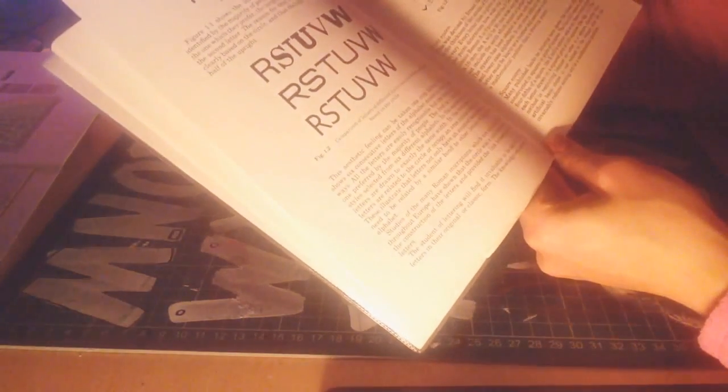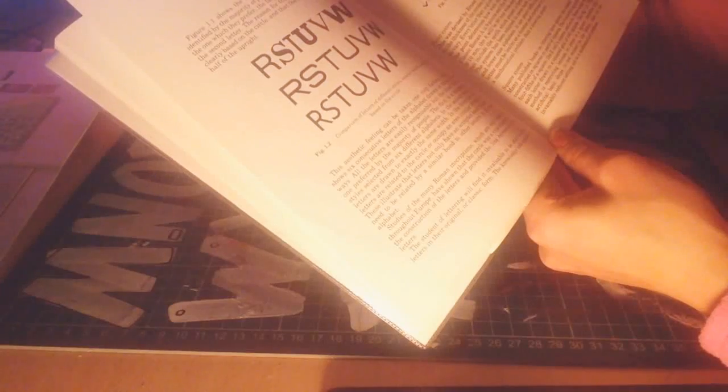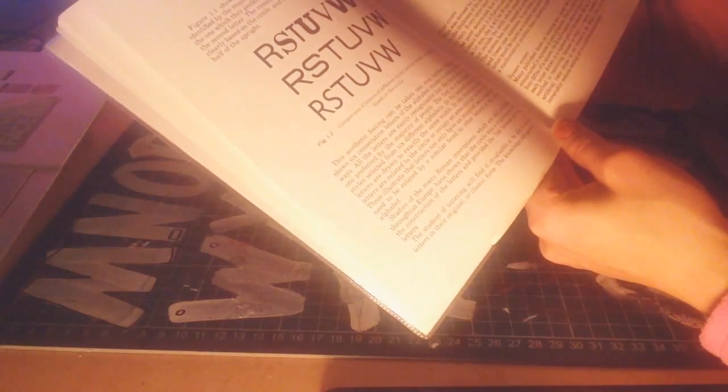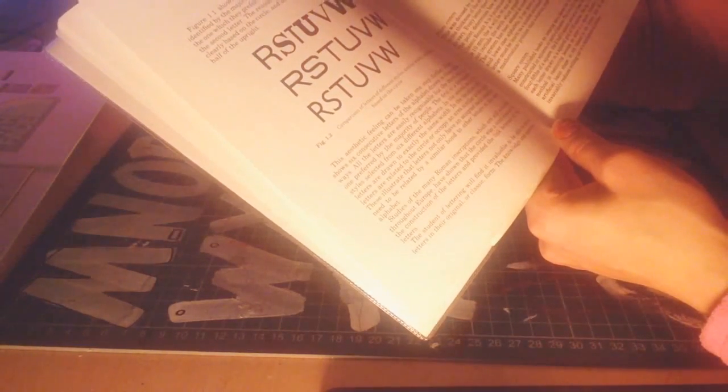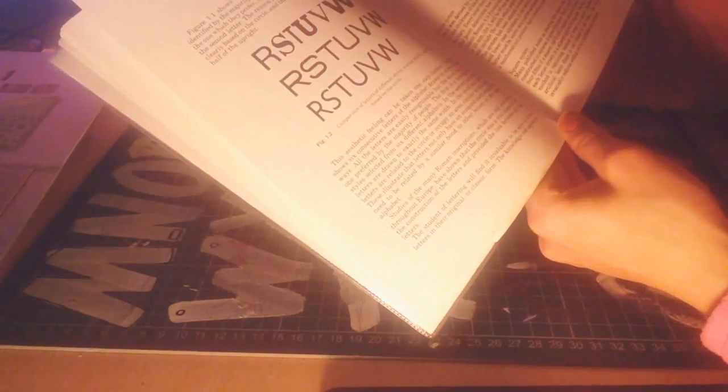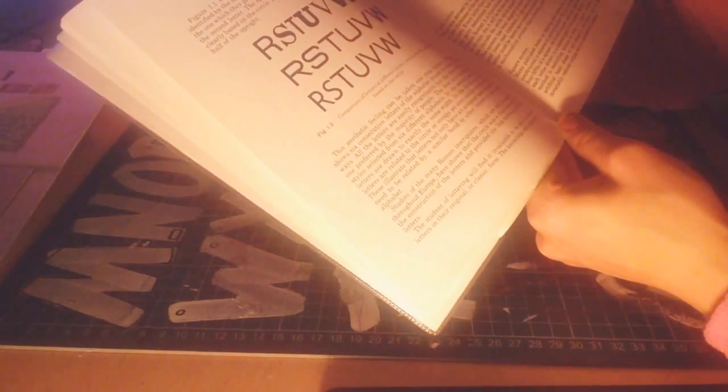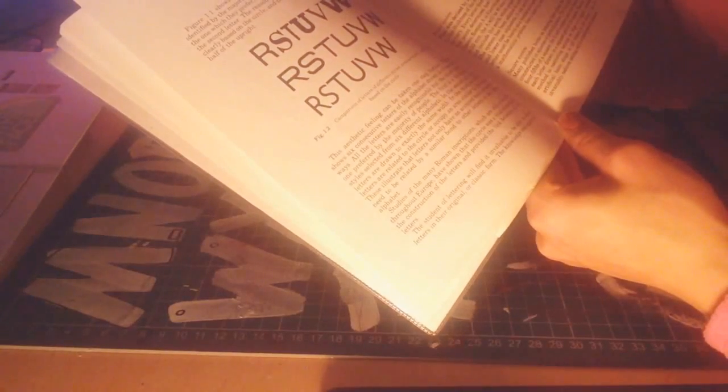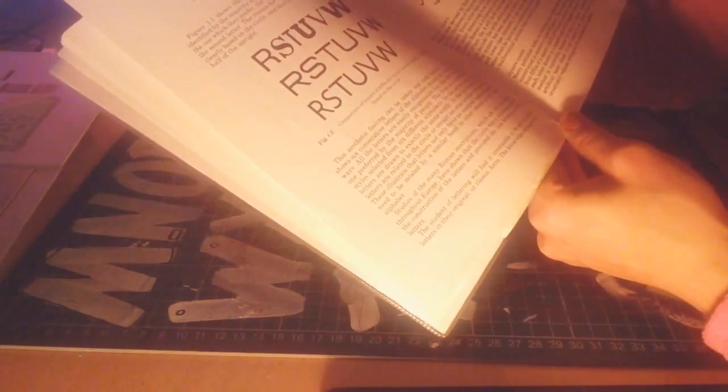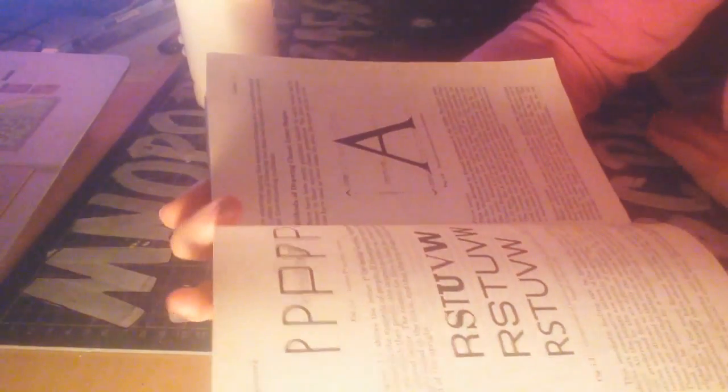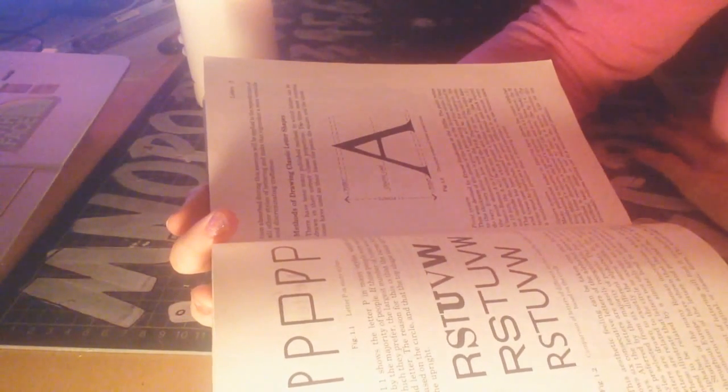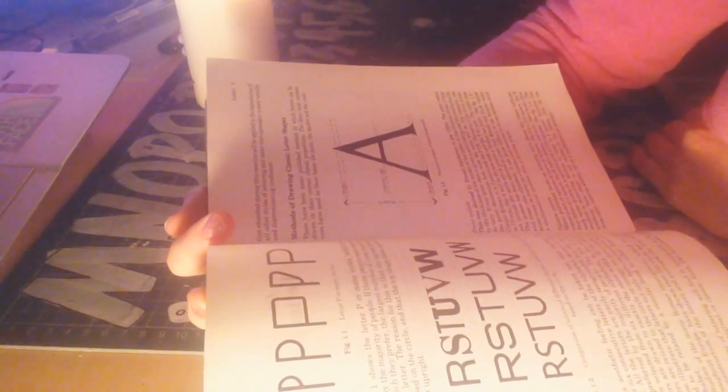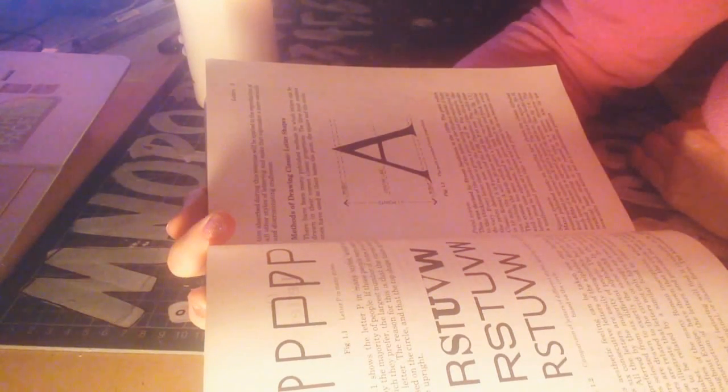Studies of the many Roman inscriptions, which are still available throughout Europe, have shown that the circle was a vital element in the construction of the letters, and provided the link between all the letters. The student of lettering will find it invaluable to be able to draw letters in their original or classic form. The knowledge and appreciation absorbed during this exercise will be applied to the reproduction of all other styles of lettering, and make that sign maker a more versatile and discriminating craftsman.